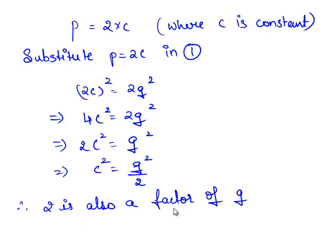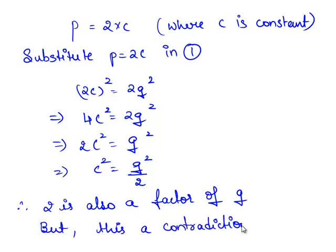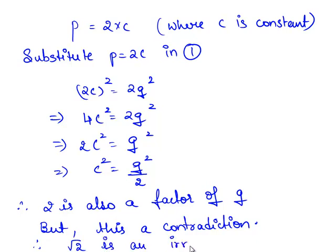Hence we have obtained two statements: that 2 is a factor of p, and 2 is also a factor of q. Therefore p and q have 2 as a common factor. But this is a contradiction, because we assumed in the beginning that p and q are integers and also co-primes. Therefore, the contradiction is due to our wrong assumption that root 2 is a rational number. Hence, root 2 is an irrational number.